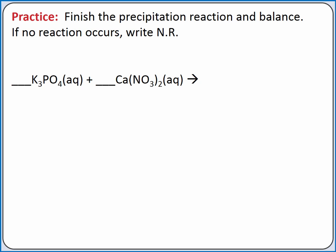In our next example, we're adding together potassium phosphate and calcium nitrate. Switching partners, we produce calcium phosphate and potassium nitrate. According to our solubility rules, phosphate salts are generally insoluble, and calcium is not an exception. So calcium phosphate is our precipitate. Both potassium salts and nitrate salts are soluble, so potassium nitrate remains in solution.